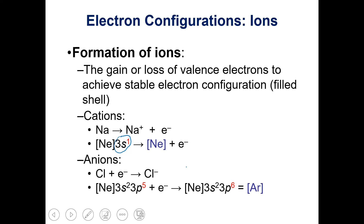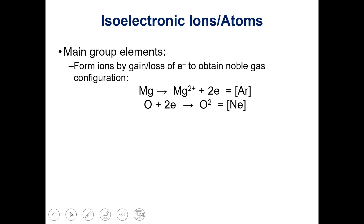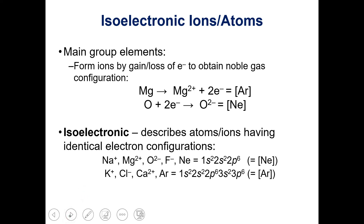So elements like sodium, chlorine, magnesium, and oxygen — most main group elements — gain or lose electrons to achieve a noble gas configuration. Elements that have identical electron configurations, such as noble gases and ions that have gained or lost electrons to reach noble gas configurations, are called isoelectronic. Isoelectronic describes atoms or ions that have identical electron configurations.